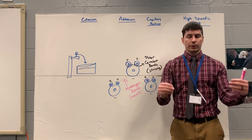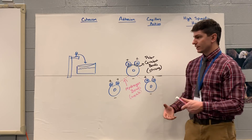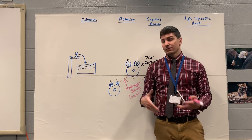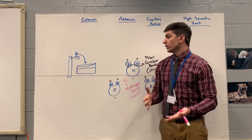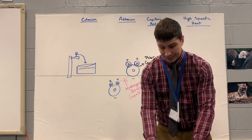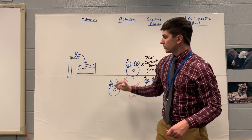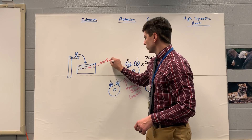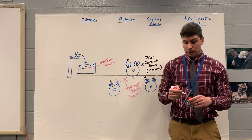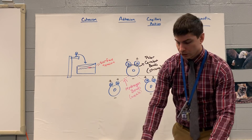Once you're under the water, those bonds reform. Once your head pokes out of the water again, you broke those bonds again. They're very, very weak — breaking a few of them is not a big deal. But with as much surface area as you have doing a belly flop, that's going to hurt because you're breaking a whole lot of hydrogen bonds. At the surface of water, those hydrogen bonds create something called surface tension.